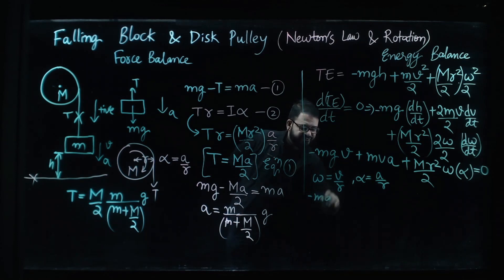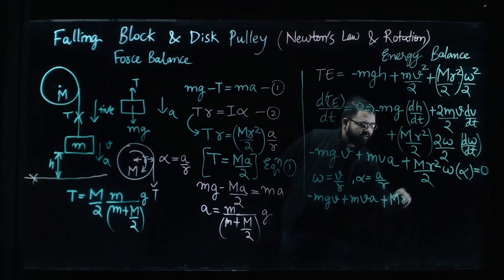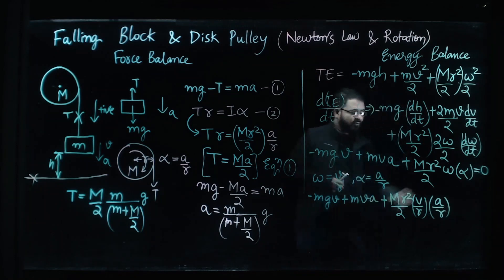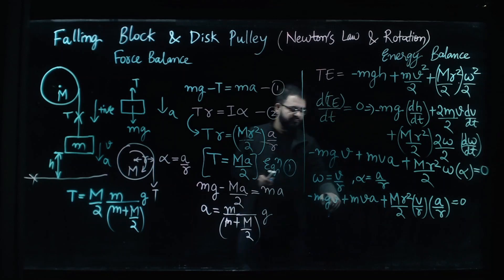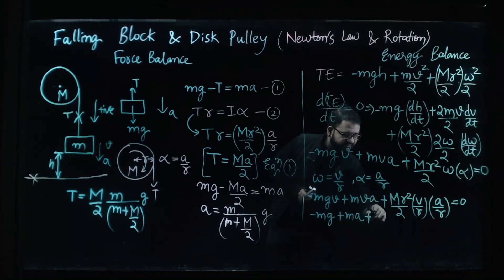Minus mg plus ma plus mr square by 2, then we have omega is equal to v upon r and we have alpha is equal to a upon r. Now this thing is going to go to zero and we see if we can get rid of velocity, so we have minus mg plus ma plus m by 2 a.